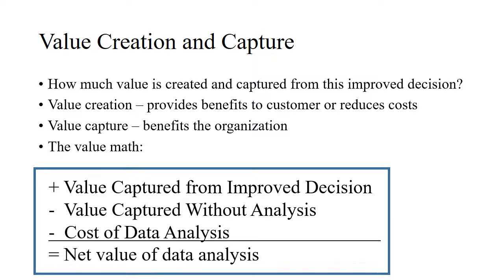If it's negative, then we shouldn't have done it in the first place. It didn't help us. So that's a good formula to keep in mind. You imagine there's this improved decision, you compare it to the status quo without the analysis, and then you subtract out the cost and time involved.